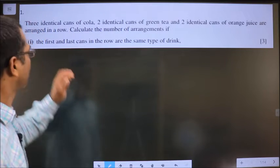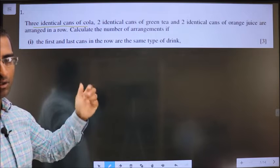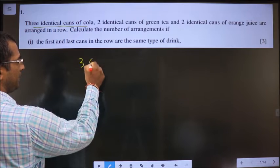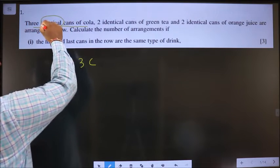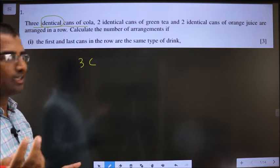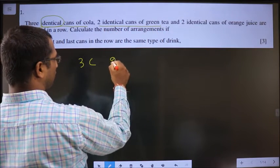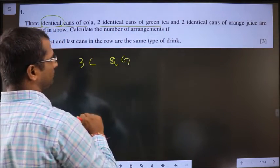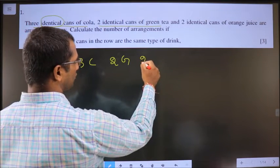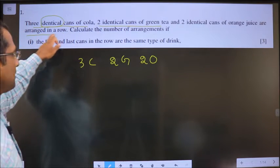Question 1. You are given 3 identical cans of cola — write it down, 3C. Stress on the word identical: these 3 are given identical. Also 2 identical cans of green tea, so 2G. And 2 identical cans of orange juice, so 2O. These 7 cans are arranged in a row.